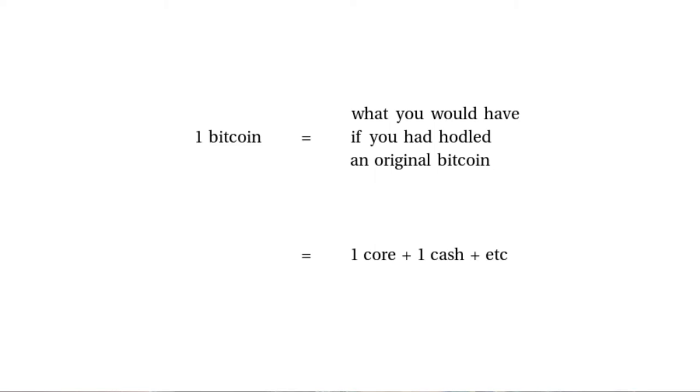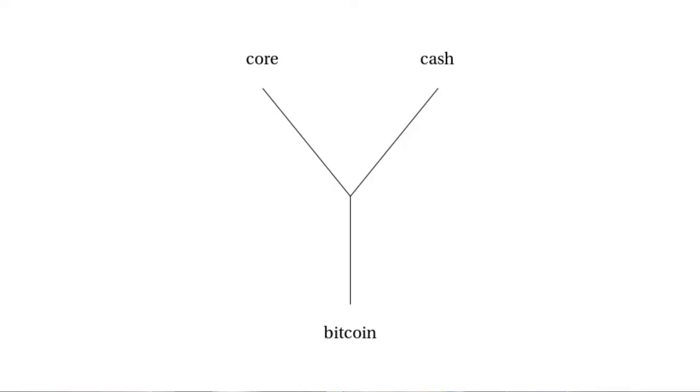It is just like in natural history where if a population splits, then we have a name for the common ancestor and we have two new names for the daughter species.